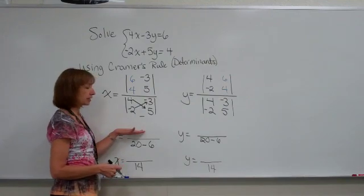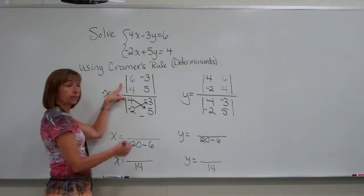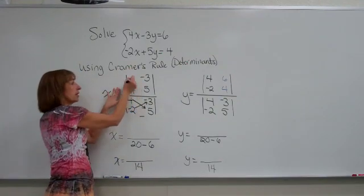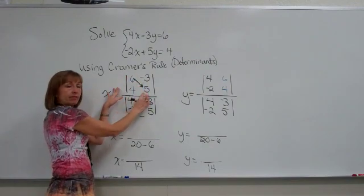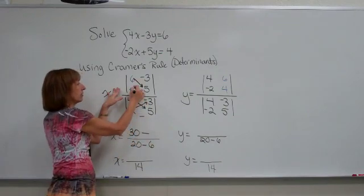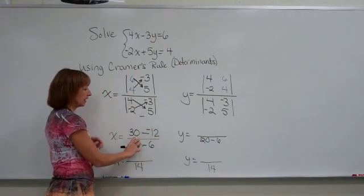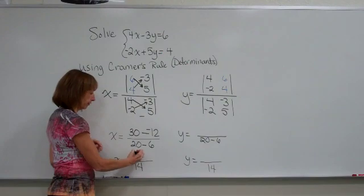Okay, let's find out what belongs in the numerator for each fraction. For the x's numerator, we want to find the value of this 2 by 2 determinant, so upper left-hand number 6 times lower right-hand number 5, 6 times 5 is 30, minus 4 times negative 3 is negative 12, and 30 minus negative 12 is 30 plus 12, or 42.